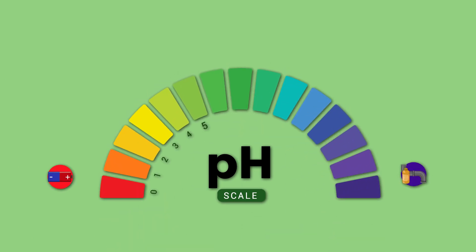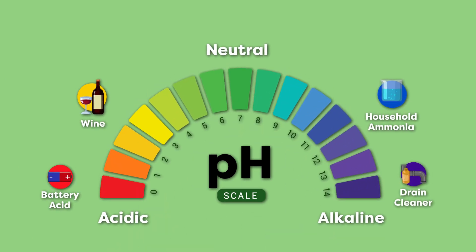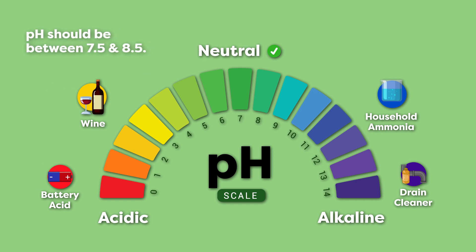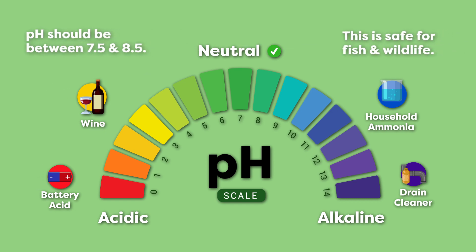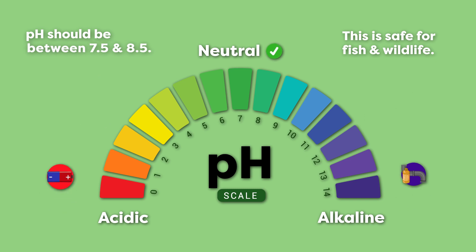pH is really simple — it's essentially how acidic or alkaline your water is. It's measured on a numeric scale from one to 14, with one being really acidic and 14 being really alkaline. You want your pH to be between 7.5 and 8.5, and we recommend that for a variety of reasons, but the main one being that most fish's natural blood pH is about 7.4.